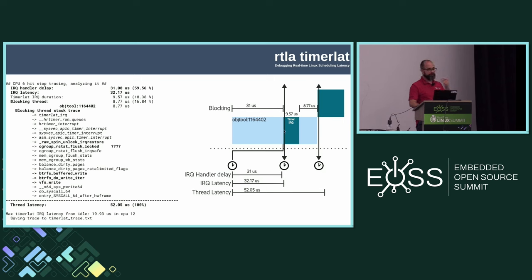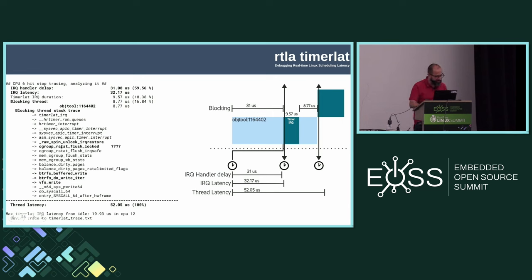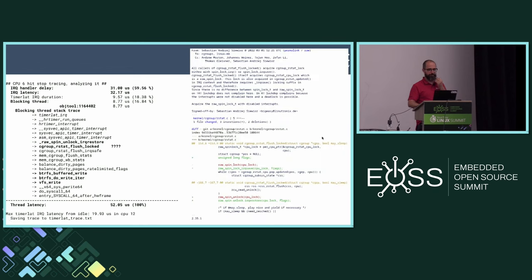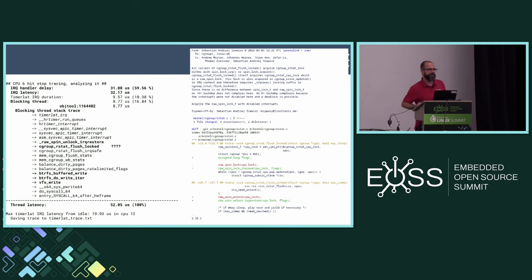With this starting point, one can start debugging the system more precisely: why is IRQ disabled inside the cgroup inside the write system call? Then one finds out there is a patch in the kernel that added this change. And one can see that this is a legitimate use case for disabling the IRQ.